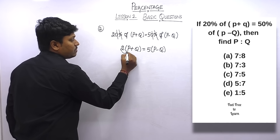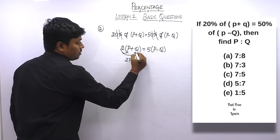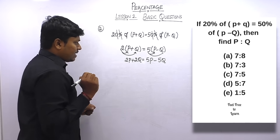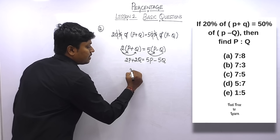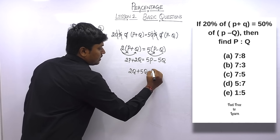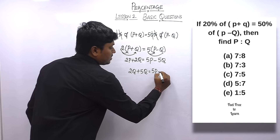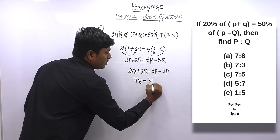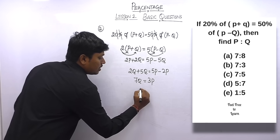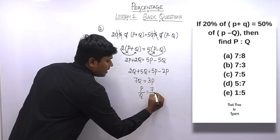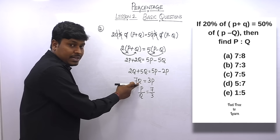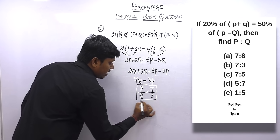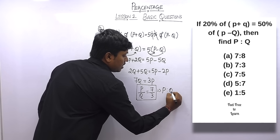Expanding: 2p + 2q = 5p − 5q. Bringing −5q to the left: 2q + 5q = 7q. Bringing 2p to the right: 5p − 2p = 3p. So 7q = 3p, giving p/q = 7/3. The answer for question 2 is p : q = 7 : 3.